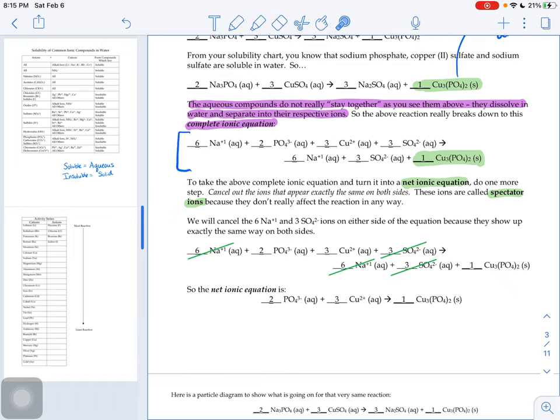Same thing with our sulfate. We have 3 SO4 2- aqueous on the reactant side, 3 SO4 2- aqueous on the product side. Exactly the same. Nothing happens to our sulfate during the course of the reaction. So I'm going to cancel out my sulfates as well.